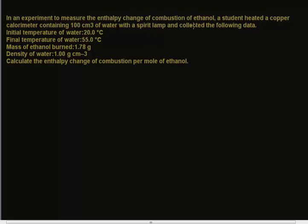So a student is heating a copper calorimeter, that's a copper container, filled with 100 cm³ of water with a spirit lamp. So this is where the alcohol is. So the alcohol is being burned or combusted to produce heat energy and that heat energy is absorbed by 100 cm³ of water.